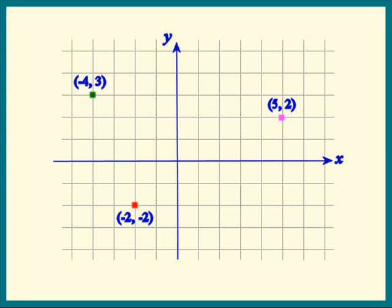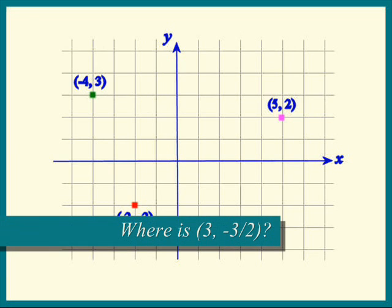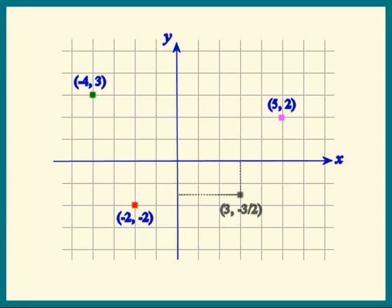Can we help Mr. Descartes find the point three comma negative three over two? Good job. There it is.